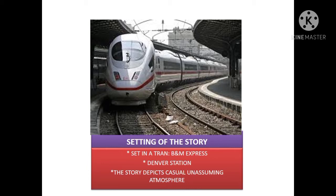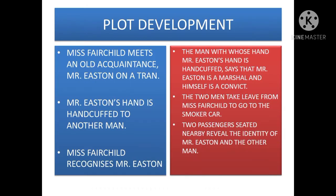Plot development: Miss Fairchild meets an old acquaintance, Mr. Eastern, on a train. Mr. Eastern's hand is handcuffed to another man.